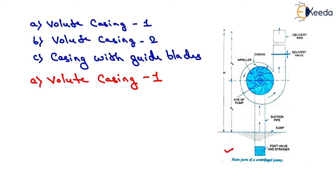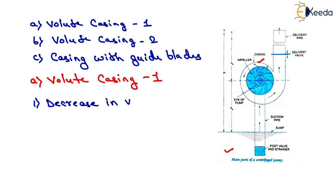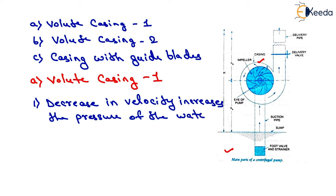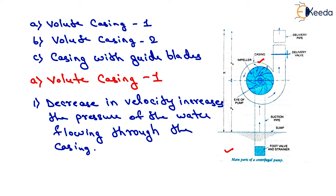This figure shows the volute casing which surrounds the impeller. It is of spiral type in which the area of flow increases gradually. The increase in area of flow decreases the velocity of flow, and the decrease in velocity increases the pressure of the water flowing through the casing. However, in the case of volute casing, a large amount of energy is lost due to the formation of eddies.